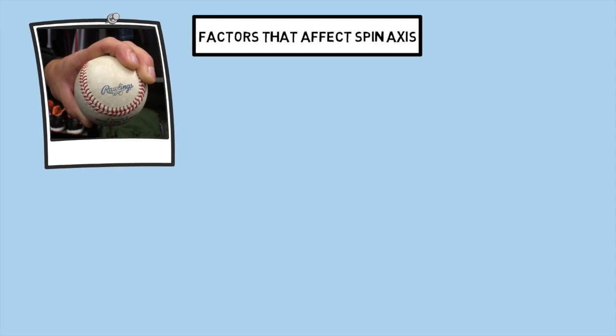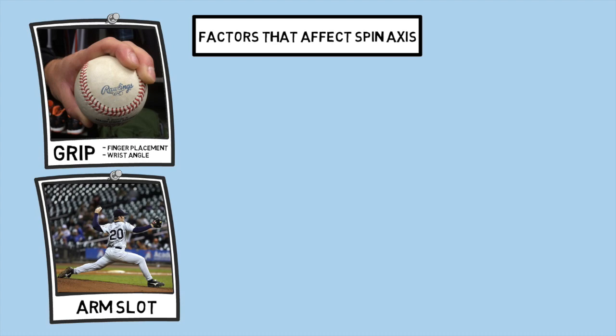There are two main ways that you can change your spin axis. The first being the way that you grip your pitches — the main two contenders in this category are going to be your finger placement as well as the seam orientation and your wrist angle. We're not going to dive into that today, but if you're interested in seeing how pitch grips specifically affect movement, let me know in the comment section down below. The second factor is going to be your arm slot. There's a Driveline article I'll link below that talks about the amount you can alter your spin axis on your fastball without changing your arm slot, and it's not that much. So this predisposition has a major impact on the way your pitches are spinning, and it's important to understand that.